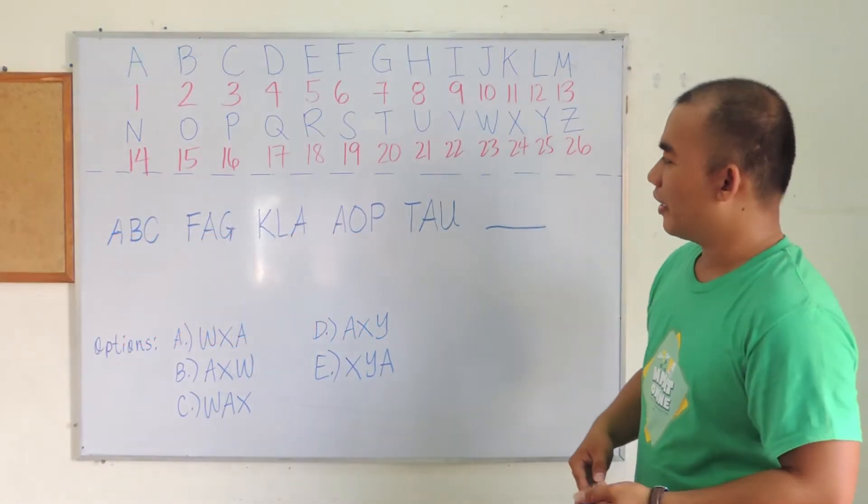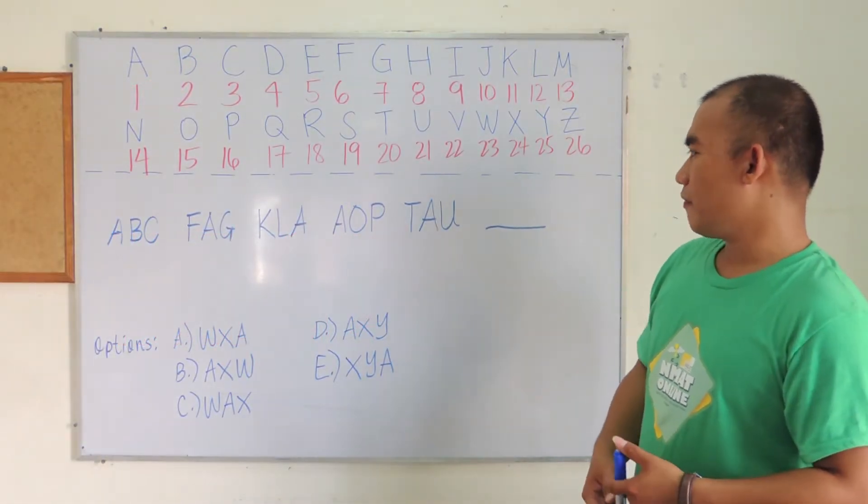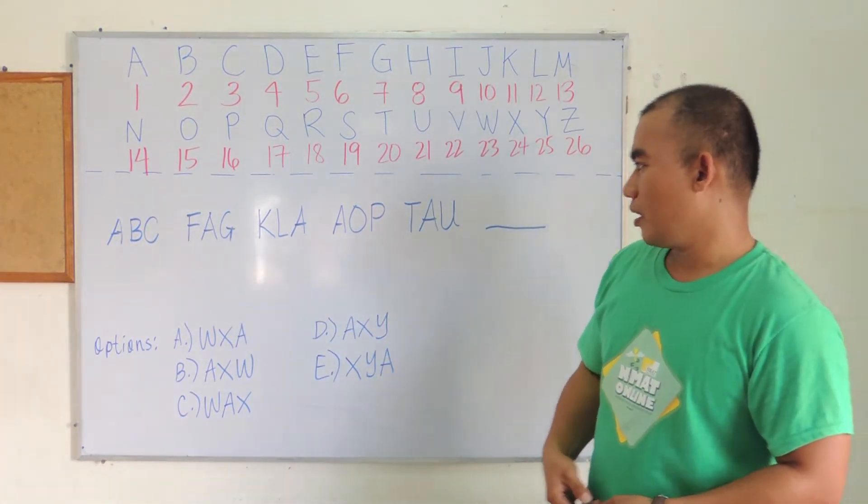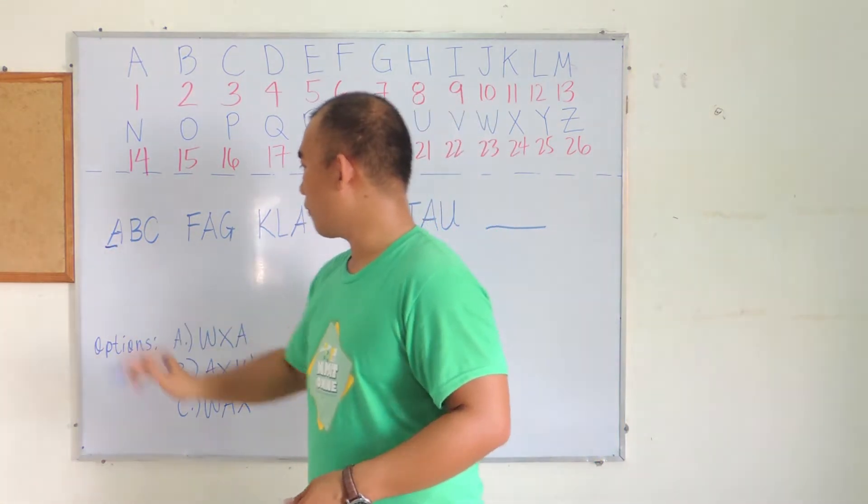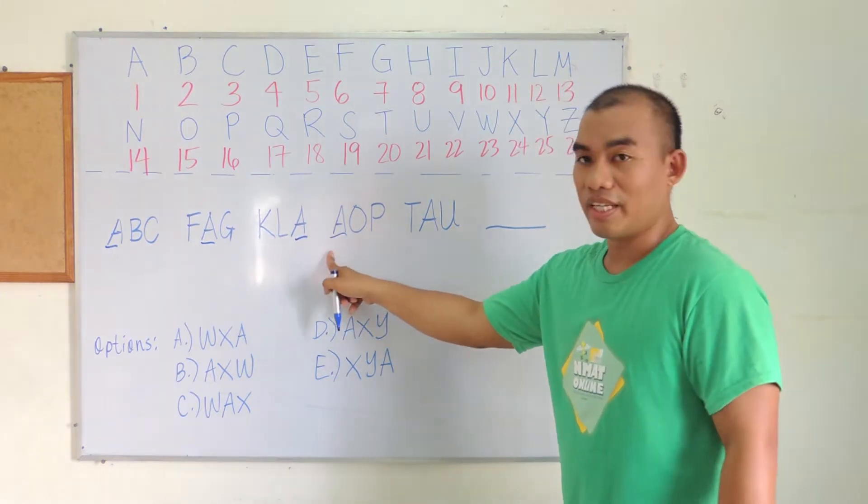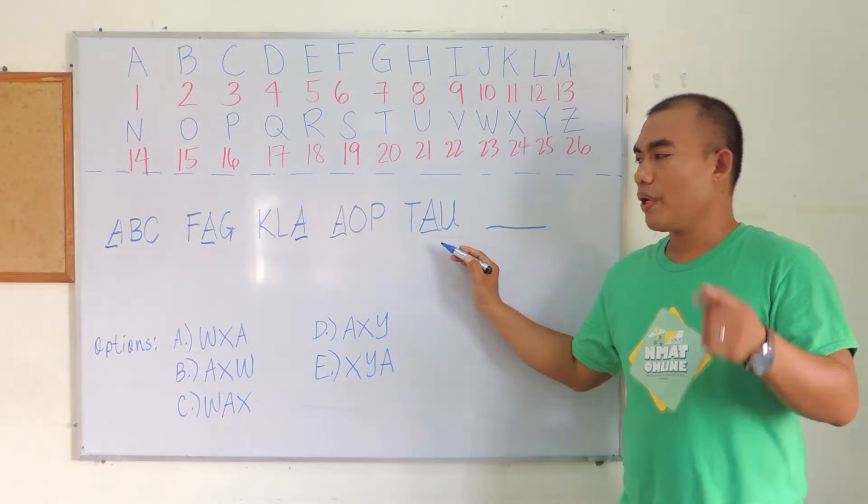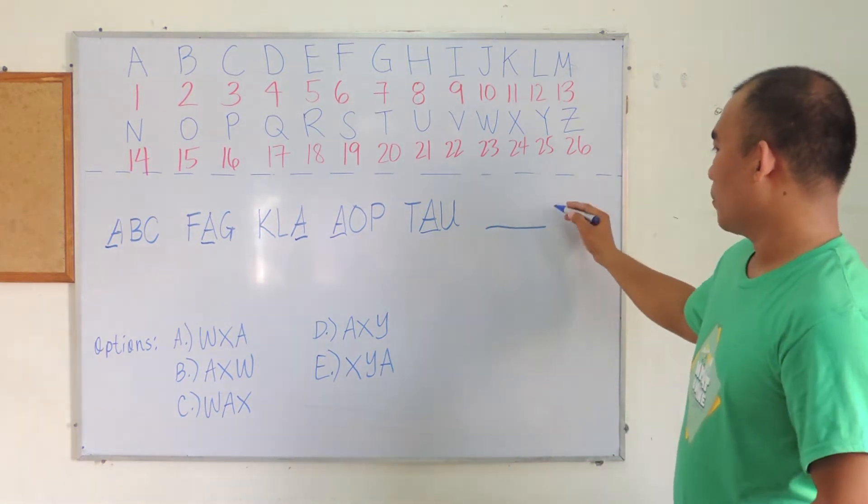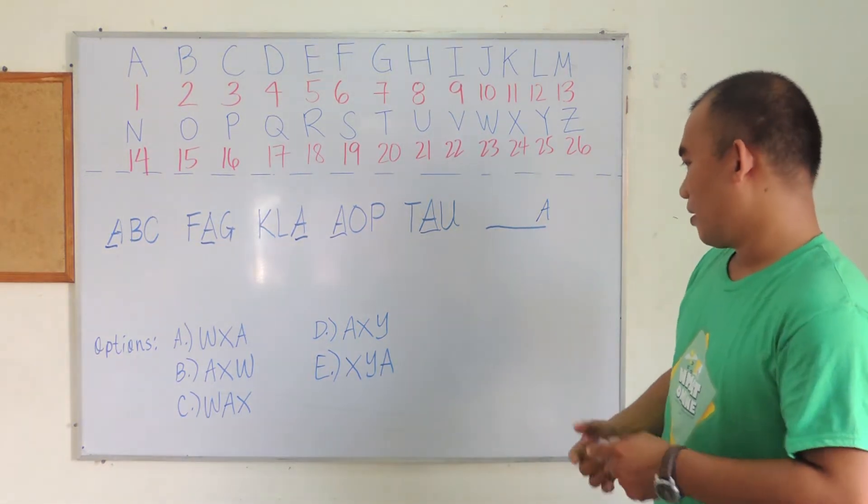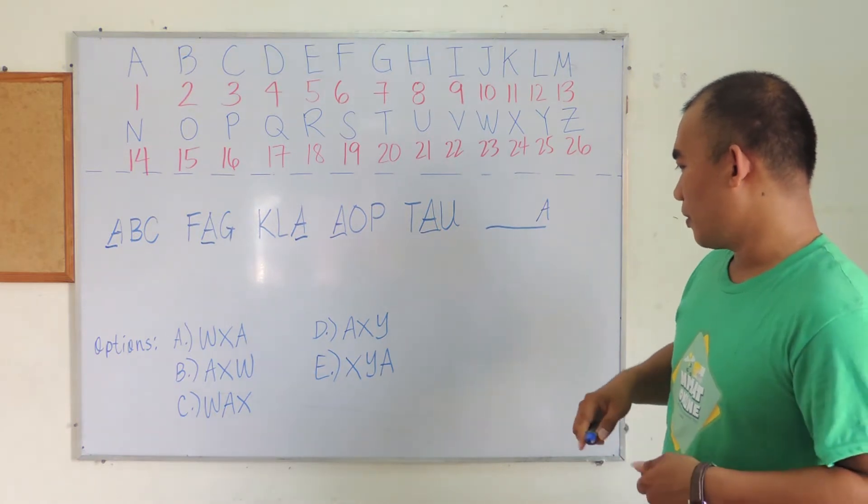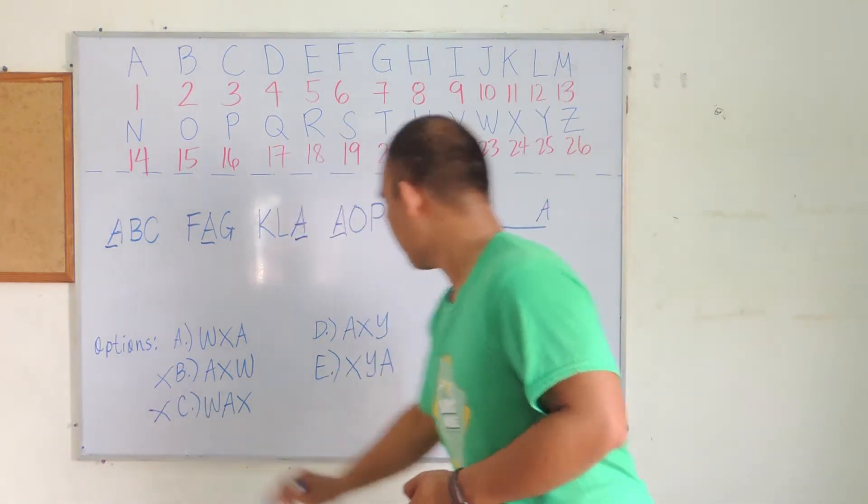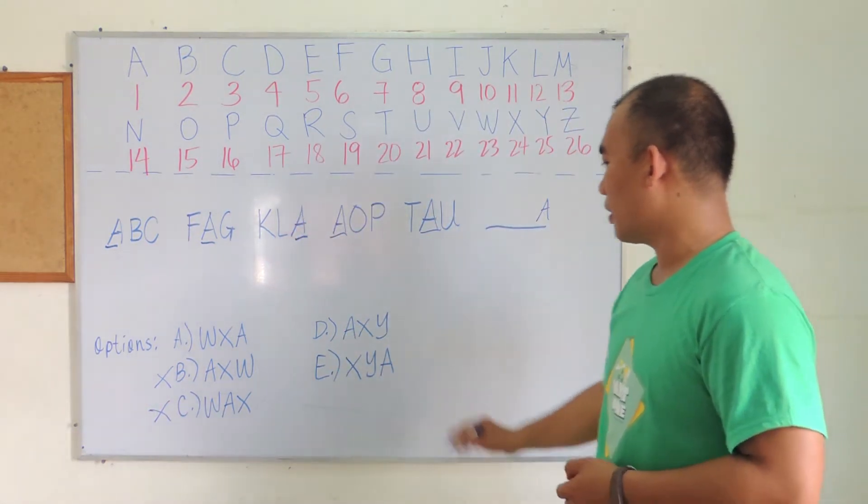We have here another example of a letter series. Observe that the sets of letters here, A is present in the first, second, third, then first again, the second. So therefore, we are expecting the answer to have A as the third letter. Using the process of elimination, we can eliminate options B, C, and also option D.